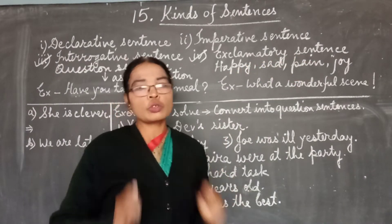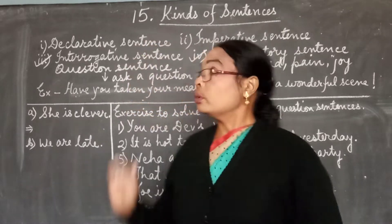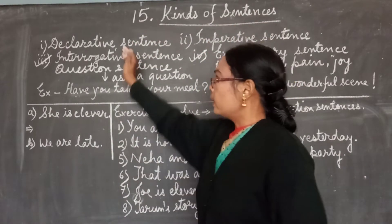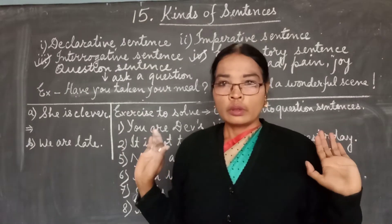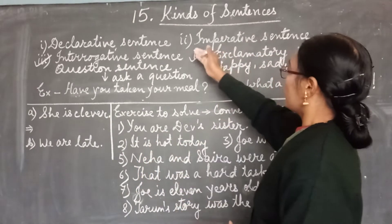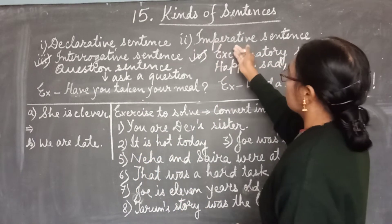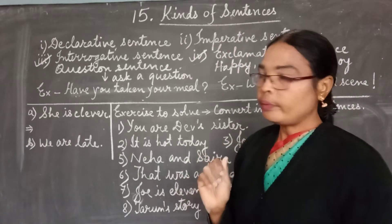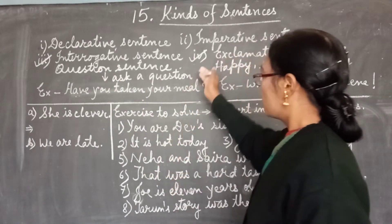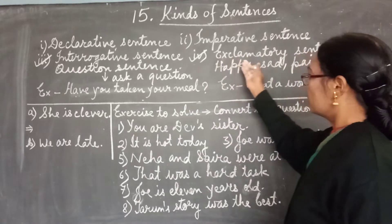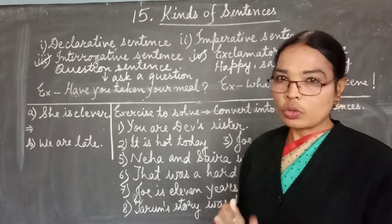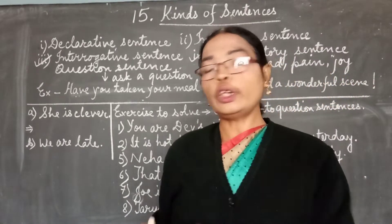So students, according to kinds of sentences: declarative we finished yesterday, and with that we covered imperative. Today we talked about interrogative and exclamatory sentences — altogether we have covered all four types.